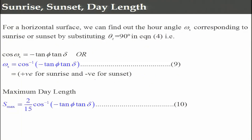We can define sunrise, sunset, and day length. For a horizontal surface, one can find the hour angle corresponding to sunrise or sunset by setting theta_z = 90 degrees in the equation. This gives: cos(omega_s) = -tan(phi)tan(delta), or omega_s = cos⁻¹(-tan(phi)tan(delta)). This value is positive for sunrise and negative for sunset. Day length can be found from omega_s - (-omega_s), which becomes 2*omega_s.